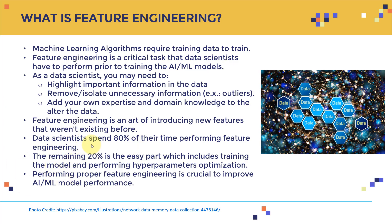Data scientists spend around 80% of their time performing feature engineering — that's very important. Building an advanced deep learning model is not as challenging as you think, especially when leveraging tools like SageMaker, TensorFlow 2.0, or Keras, which make it extremely easy to build networks with millions of weights. Actually, data scientists spend only around 20% of their time training the model and performing hyperparameter optimization. The main work exists in the data — how to give the model the right, important data through proper feature engineering.